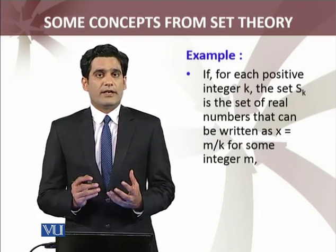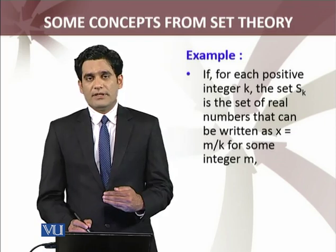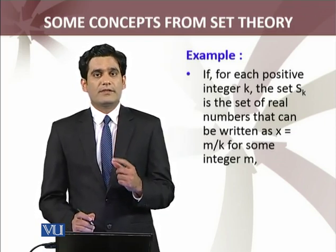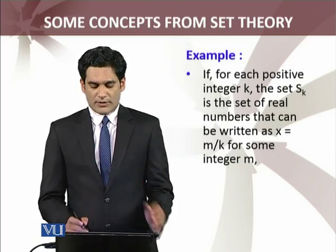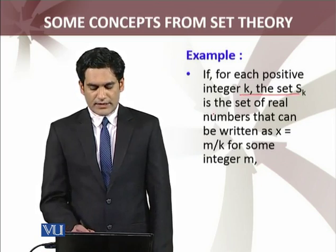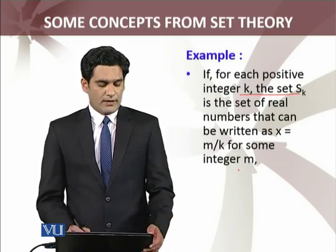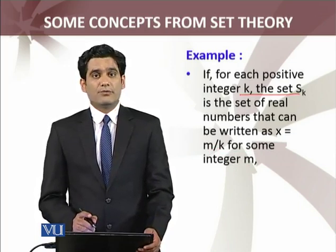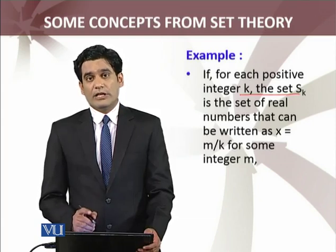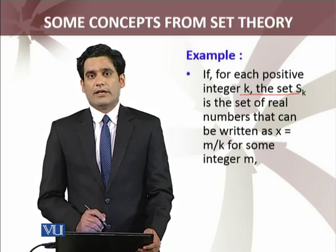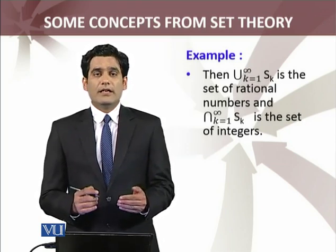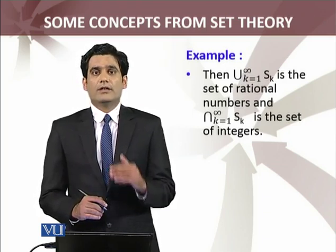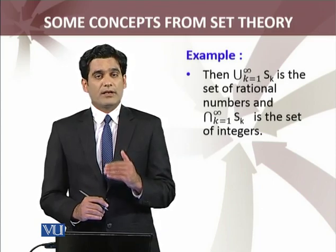Let's discuss another example. अभी जो example हमने discuss की — इसमें collection F arbitrary collection of sets थी जो uncountable थी. अब जो example हम discuss कर रहे हैं, इसमें Sk define की है — Sk is the set of real numbers that can be written as x = m/k for some integer m. यह infinite sequence of sets का example है. इनकी union करेंगे तो we will get the complete set of rational numbers. अगर infinite sequence of sets की intersection consider करूँगा, तो I am going to have the complete set of integers.